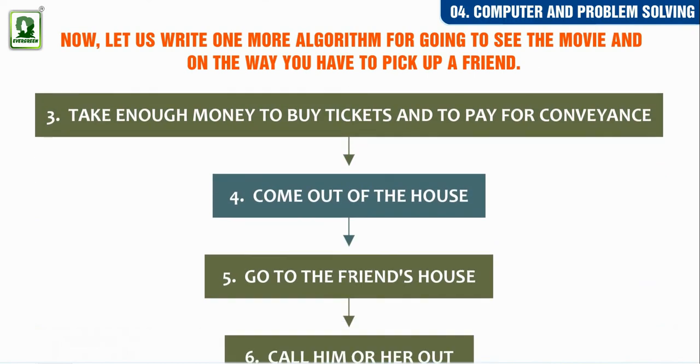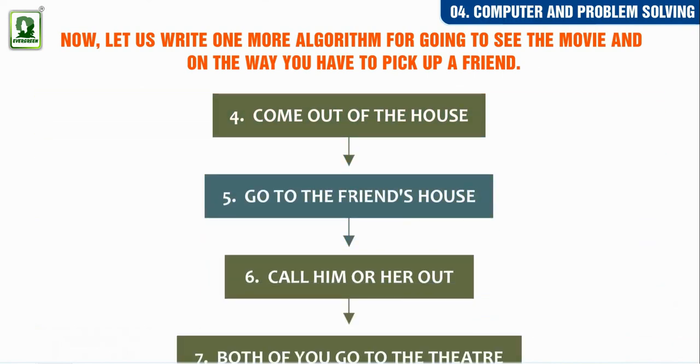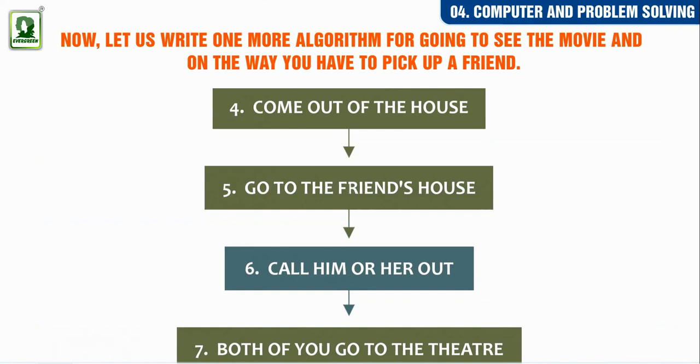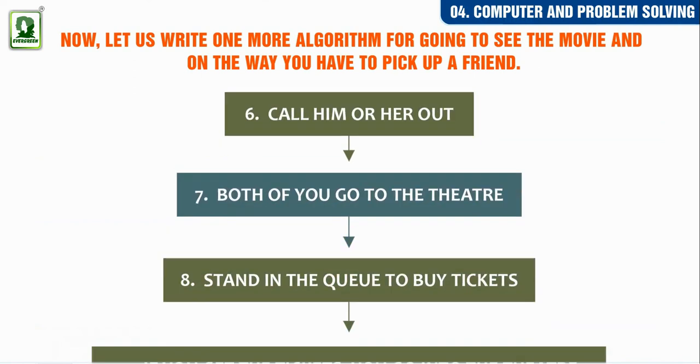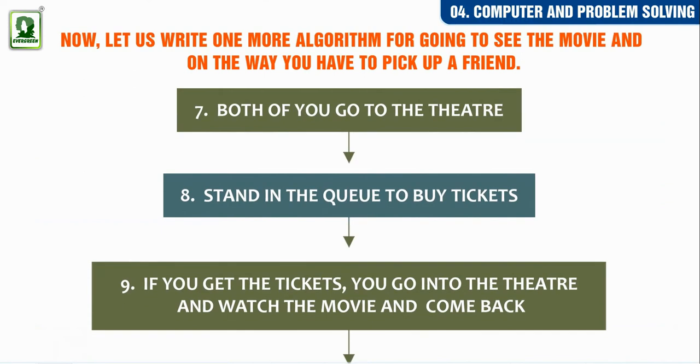Come out of the house. Go to the friend's house. Call him or her out. Both of you go to the theatre. Stand in the queue to buy tickets.